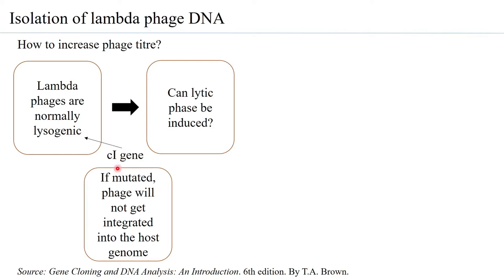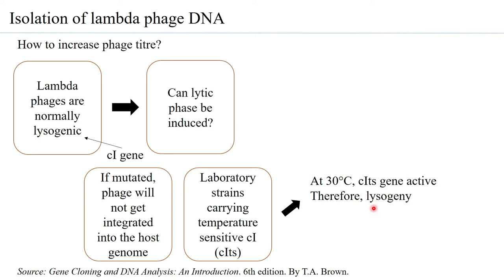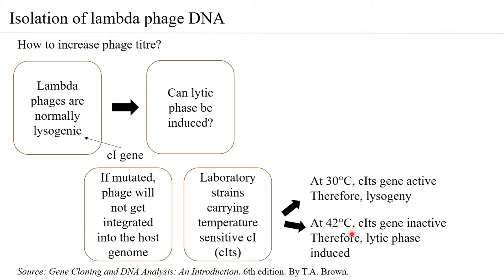If this CI gene is mutated, the phage will not get integrated into the host genome. Several laboratory strains have been developed which carry the temperature-sensitive CI gene (CITS). At 30°C, the CITS gene is active and the lambda phage will undergo lysogeny. But at 40 to 42°C, the CITS gene becomes inactive and the lytic phase is induced. So at 30°C it is switched off with no multiplication of DNA, but at 42°C it gets switched on. This is the essence of creating the temperature-sensitive CI lambda phage mutant, with the basic idea being to increase the phage titer.